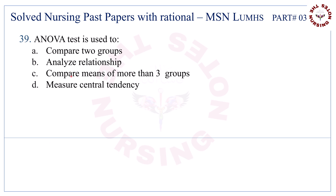Question number 39. ANOVA test is used to — the correct answer is C — compare means of more than 3 groups.